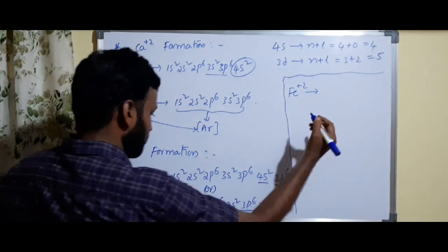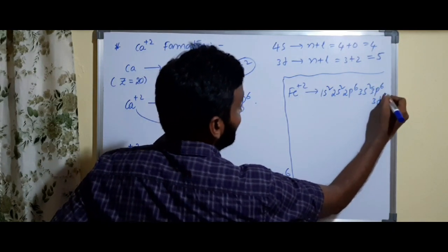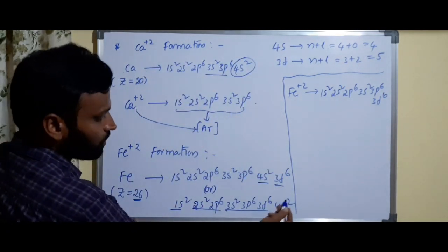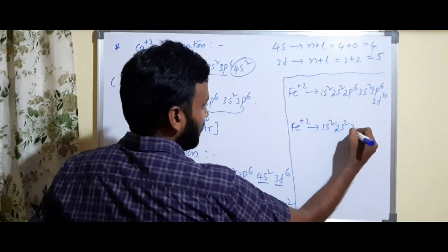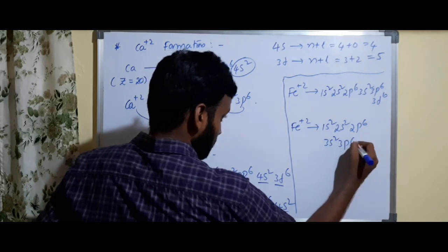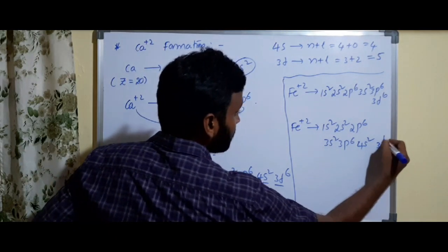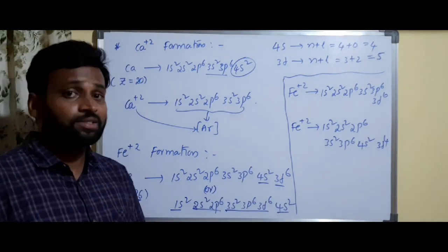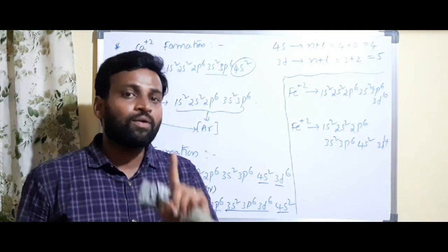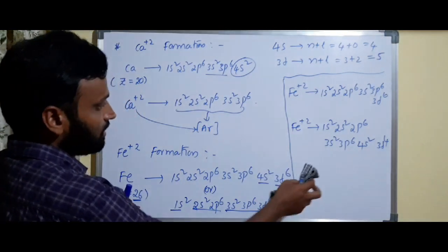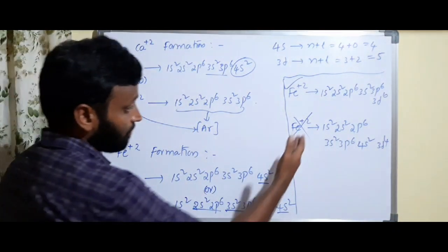Fe²⁺ configuration is 1s², 2s², 2p⁶, 3s², 3p⁶, 3d⁶ — because you removed 2 electrons from 4s². Some people incorrectly write Fe²⁺ as removing from 3d giving 3d⁴ — that is absolutely wrong. The correct answer removes from 4s (highest n value), giving 3d⁶ remaining. You must remove from the highest n-value subshell.